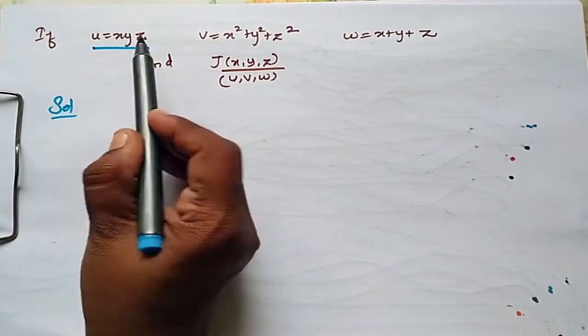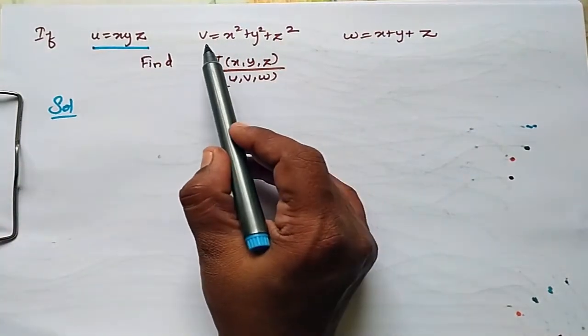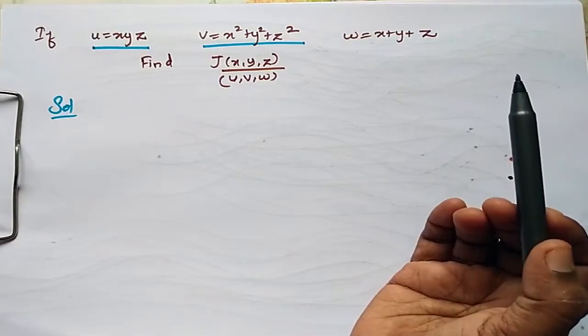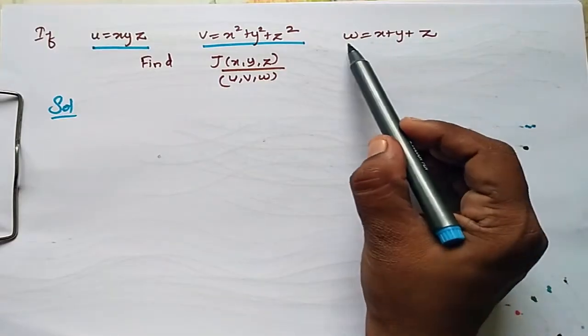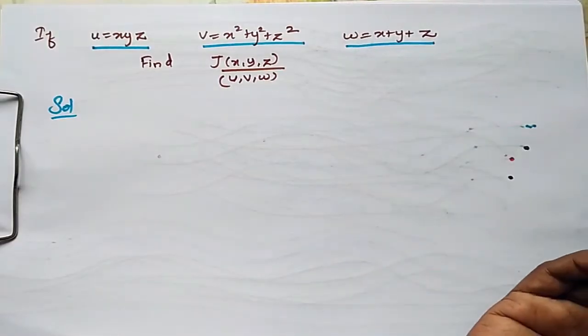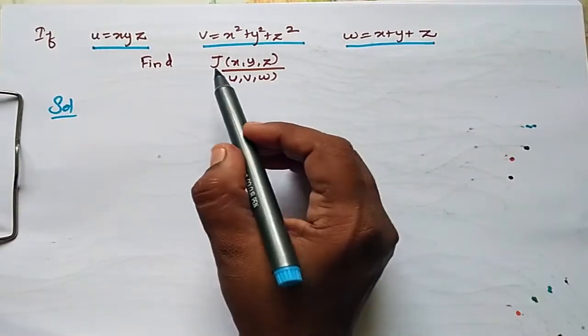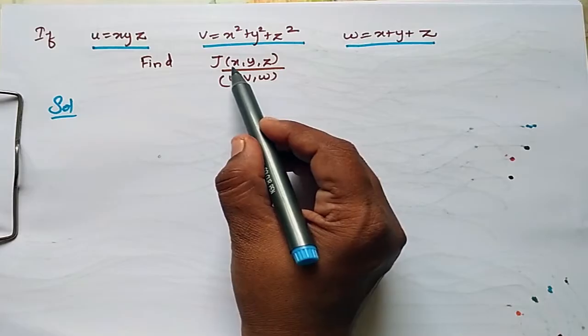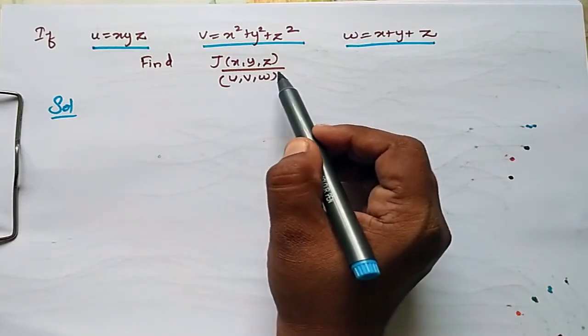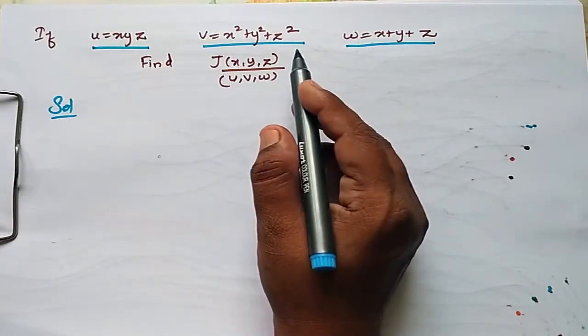If u is equal to x, y, z; v is equal to x square plus y square plus z square; w is equal to x plus y plus z — find J of x, y, z by u, v, w.